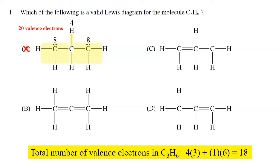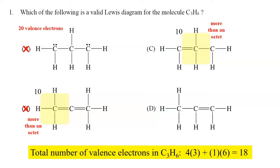Moving on to choices B and C, what I'm looking for would be a violation of the octet rule, which would be either less than an octet or more than an octet around a particular atom. In choice B, I can see at least one carbon atom that has a violation of the octet rule. I can eliminate choice B because that carbon atom on the left has more than an octet around it.